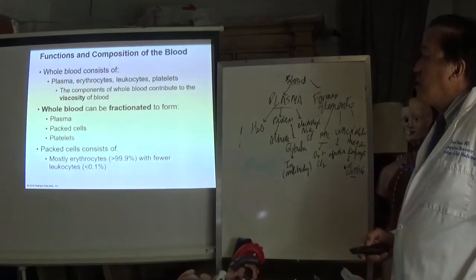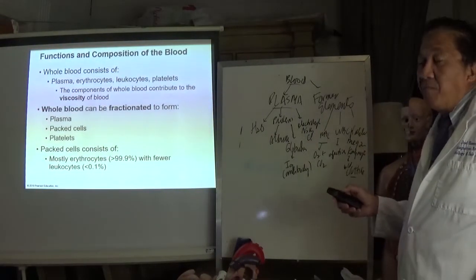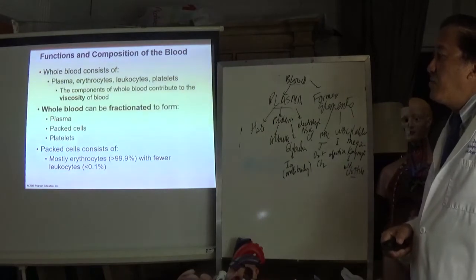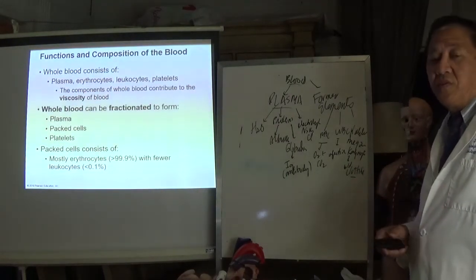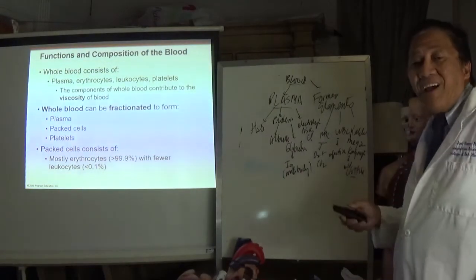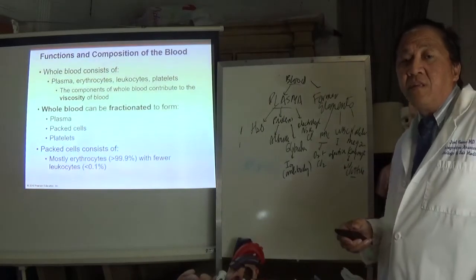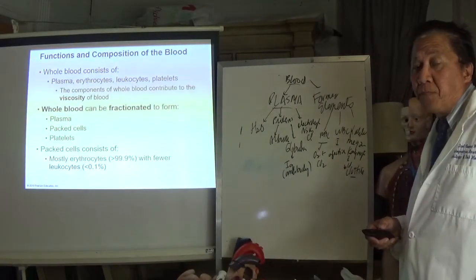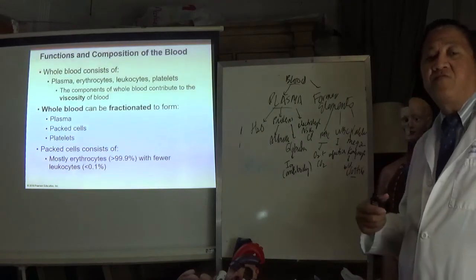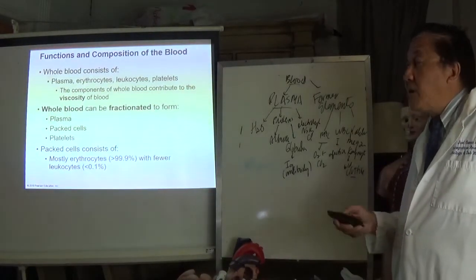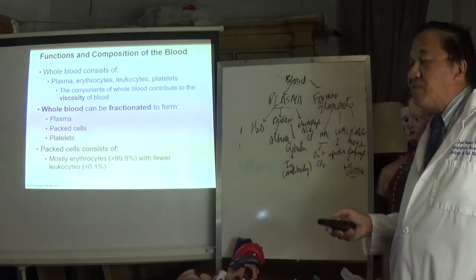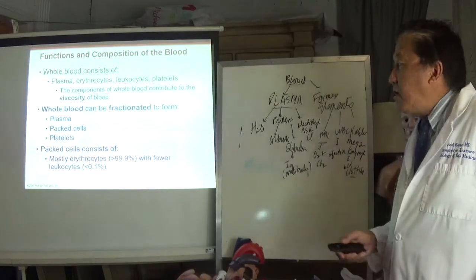Waste products such as urea, creatinine, and uric acid must be removed by the kidney and excreted in the urine. Other waste products include bilirubin and ammonium ions. Blood is made up of plasma and formed elements including erythrocytes, which contribute to the viscosity of the blood. These components can be separated through centrifugation, which separates the plasma from cells and platelets. Packed cells consist mostly of erythrocytes.